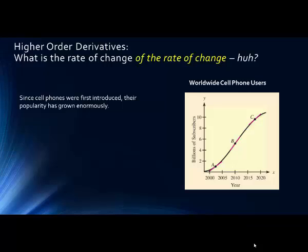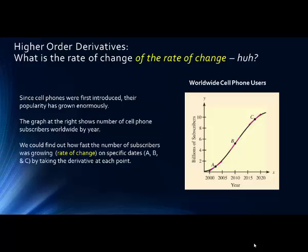Since cell phones were first introduced, their popularity has grown enormously. The graph at the right shows the number of cell phone subscribers worldwide by year. We could find out how fast the number of subscribers was growing—the rate of change—on specific dates, for example at point A, B, and C, by simply taking the derivative at each point.